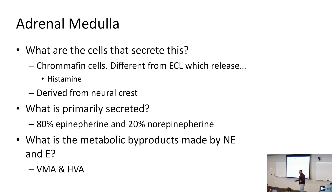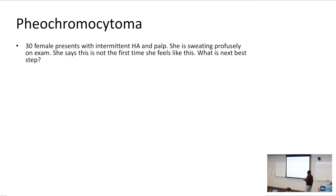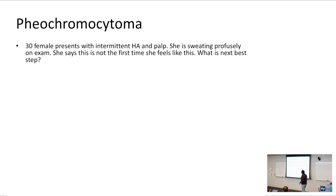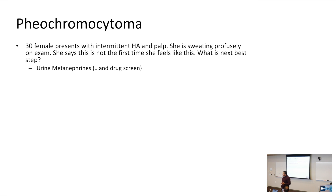Let's talk about pheochromocytoma. Watch for the presentation of a 30-year-old female who presents with intermittent headache, palpitations, and profuse sweating on exam, with intermittent bouts of this pro-sympathetic drive. What is the next best step? You want to get urine metanephrines and probably a drug screen, because pheochromocytoma is one of those things we learn in medical school a lot but rarely see in clinical practice.